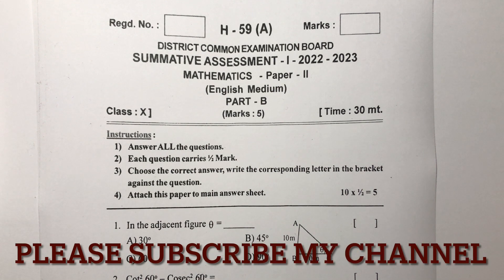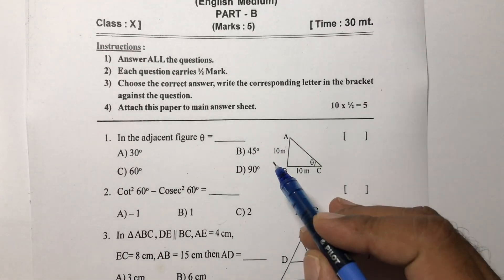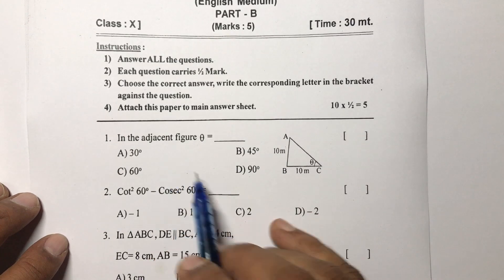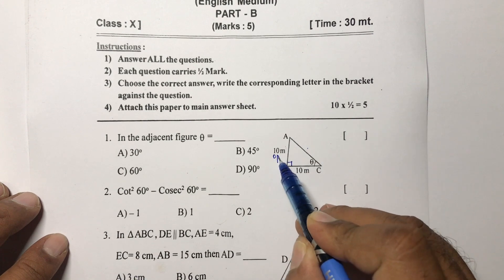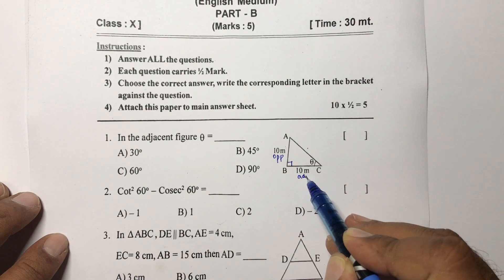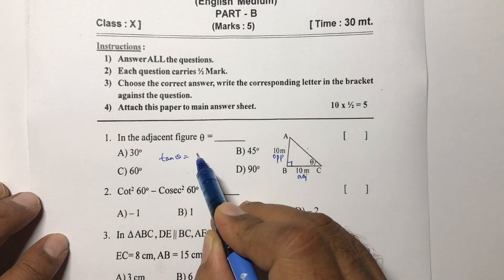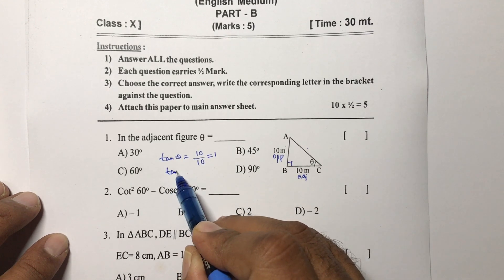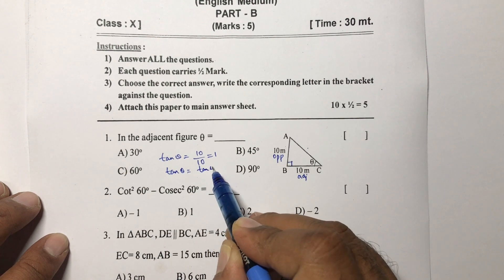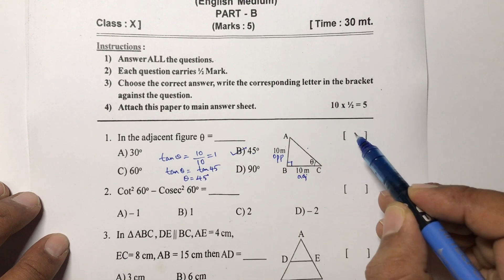Summative assessment 1, 22-23 mathematics paper 2, Kamam district, part B. First question: in the adjacent figure, find theta value. Here if this is theta, this is 90 degrees, hypotenuse, opposite, and adjacent. Using tan theta equals opposite by adjacent, which is 10 by 10, equals 1. Tan theta equals 1 occurs at tan 45, so theta is 45 degrees. The correct option is B.